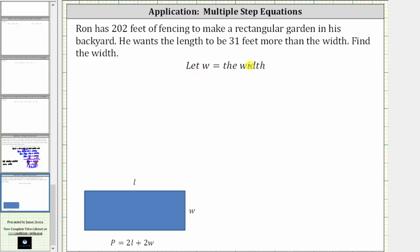So looking at the rectangle below, if we use the variable w for the width and Ron wants the length to be 31 feet more than the width, the length would be w plus 31. And now we know the fencing goes around the garden, which would be the same as the perimeter of the rectangle.